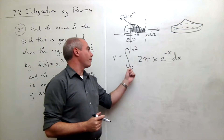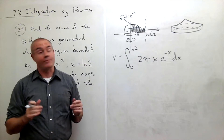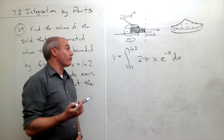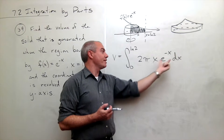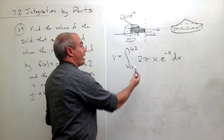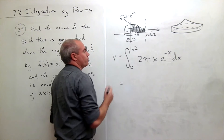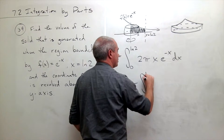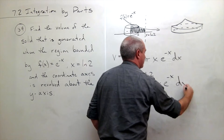In other words, we have the integral from a to b of 2π·r·h dx, which is exactly what I want. Now that we have this set up, we need to integrate it. We're going to integrate by parts because we have x·e^(-x) — I know how to differentiate x and how to find the antiderivative of e^(-x). I can move the 2π outside, so let's rewrite this as 2π times the integral from 0 to ln(2) of x·e^(-x) dx.